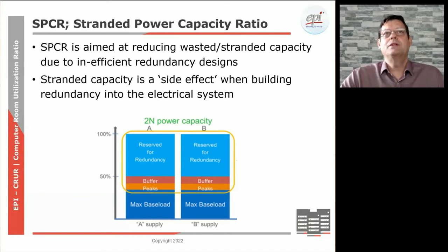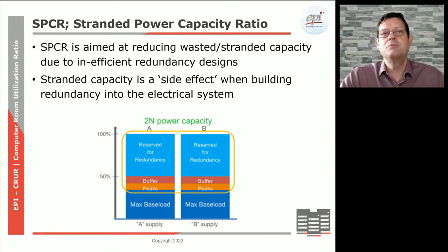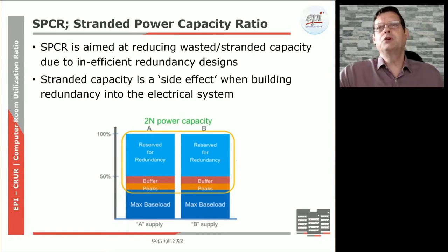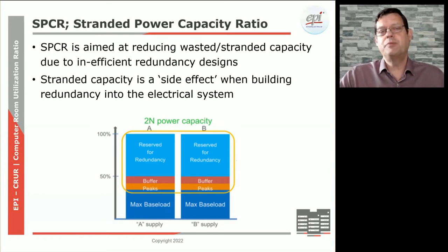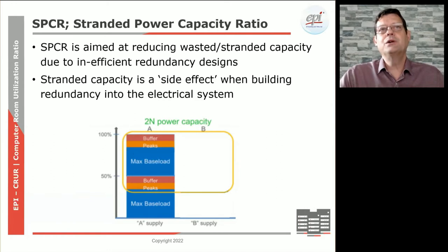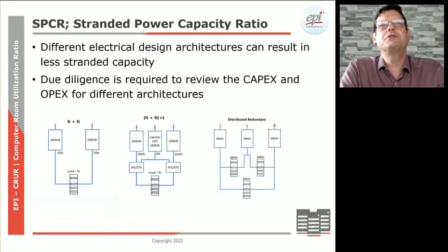In a traditional setup with A and B supply, we normally have a maximum base load. We typically go for about 40% maximum load because we allow for some peak loading and some buffering. The other part is basically unused — the idea being that once the B supply fails, that load is added to the A supply. Depending on what type of setup you have, there could be quite a difference in terms of stranded capacity. In a traditional N plus N design, theoretically 50% of load goes left and 50% goes right, meaning 50% is basically going to waste.